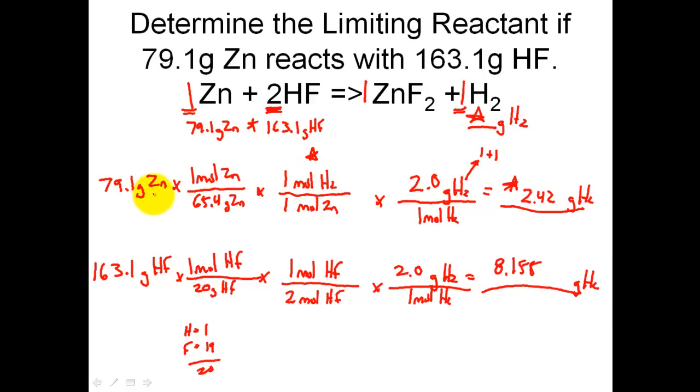So once zinc is run out, the only thing I will produce is 2.42 grams of H2. So zinc, therefore, is known as my limiting reactant. And that will make HF my excess reactant.